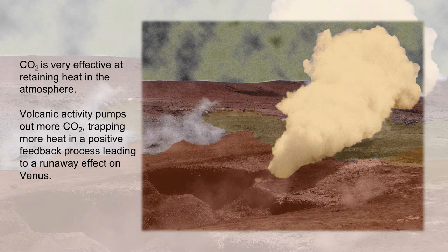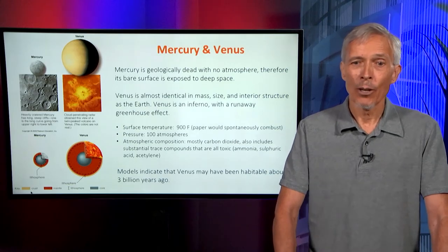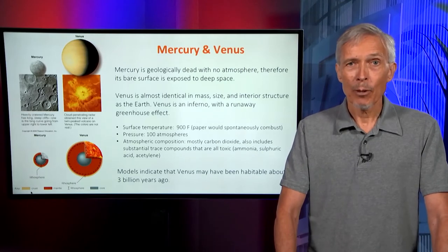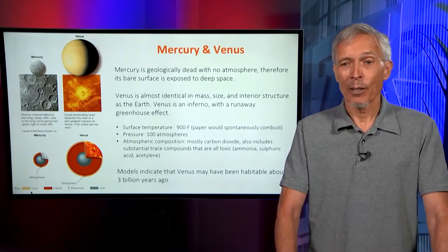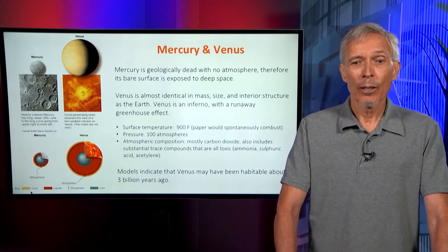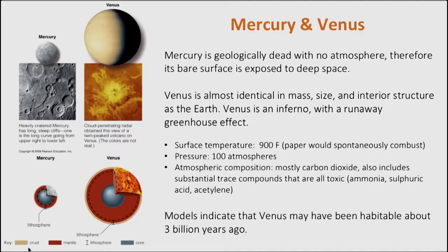The larger temperature of the Venusian surface cannot be explained by its proximity to the Sun, because that's not a very large effect. The atmospheric composition also has other toxic components: ammonia, sulfur dioxide, sulfuric acid, and acetylene — all toxic on Earth, though present in trace amounts in the Venusian atmosphere. And yet models suggest that three billion years ago, before the runaway greenhouse effect, Venus potentially could have been habitable and could have possibly hosted liquid water, if not on the surface then underground.